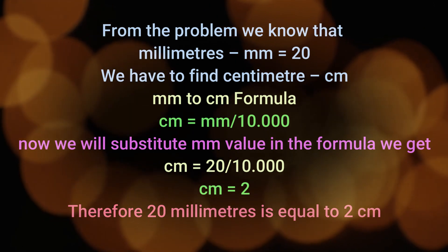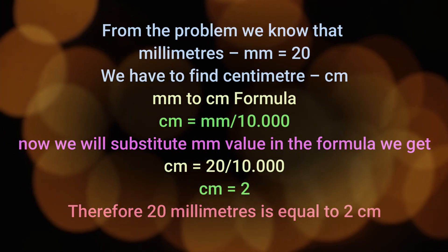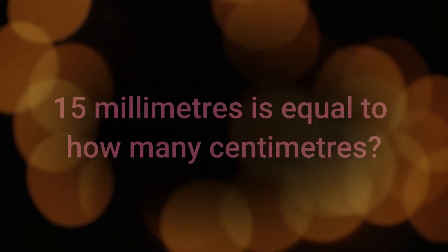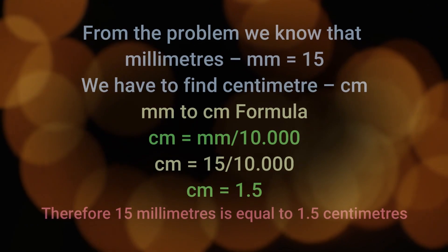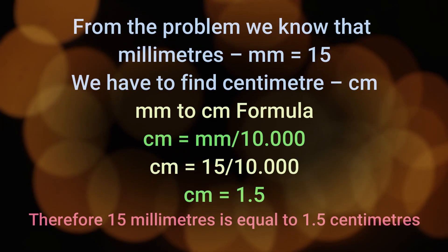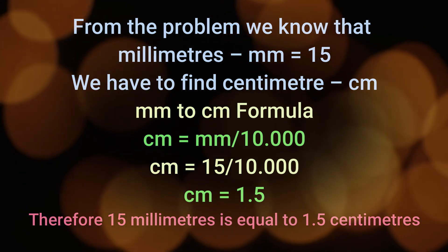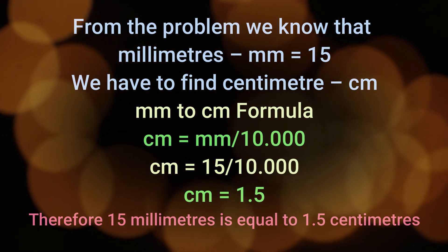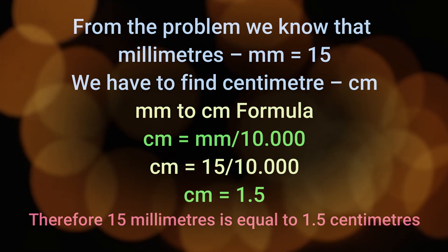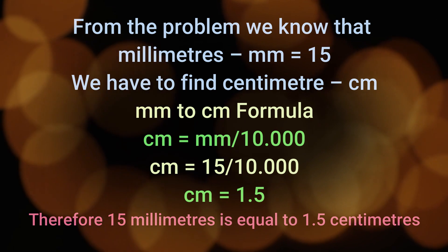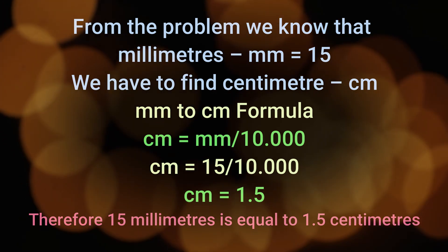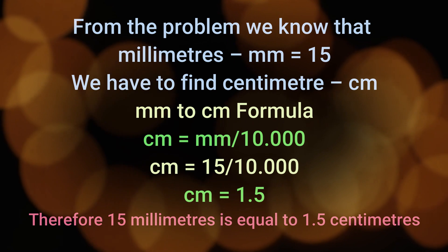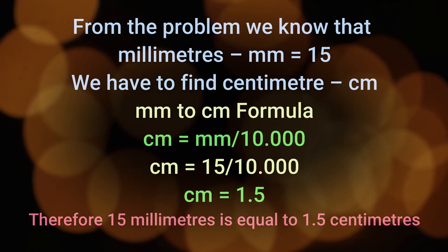Example 2: 15 millimeters is equal to how many centimeters? From the problem, we know that mm = 15. Here we have to find centimeters. Using the mm to cm formula: cm = mm / 10. Substituting the value, we get cm = 15 / 10. Therefore, cm = 1.5. So 15 millimeters is equal to 1.5 centimeters.